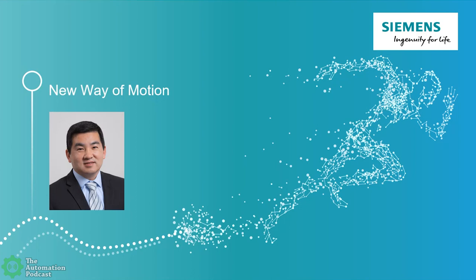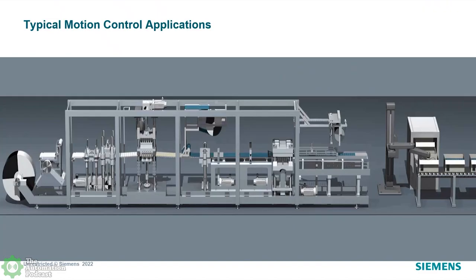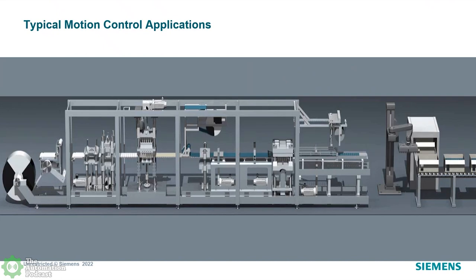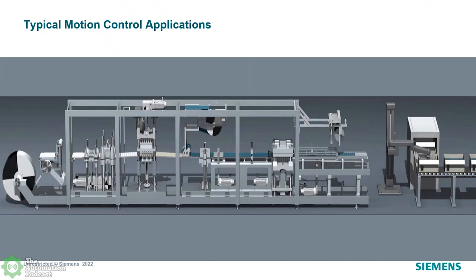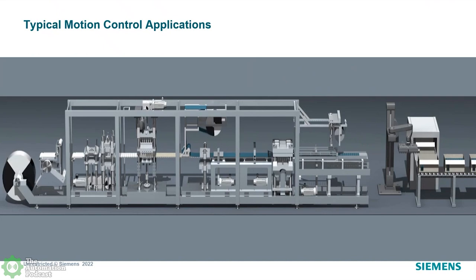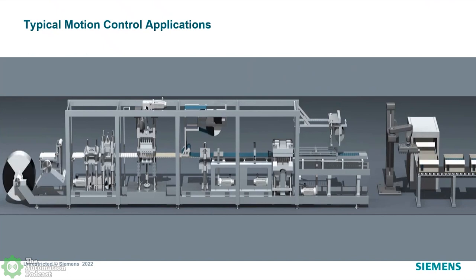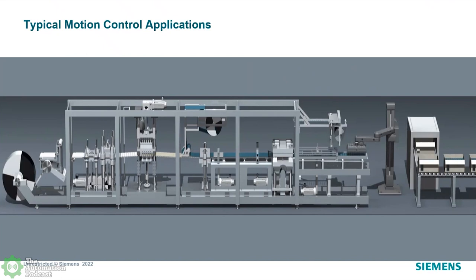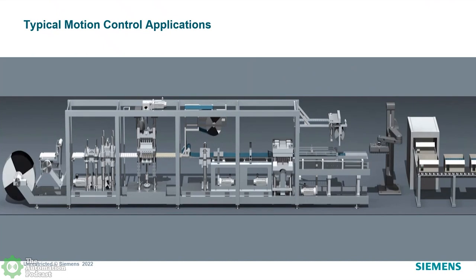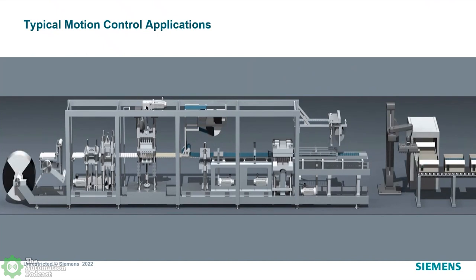We like to call it a new way of motion. Hopefully at the end of this presentation podcast, you take away a new way of thinking about motion. When we talk about motion, I always like to jump in — what is the typical motion application? Here we have a machine doing multiple different synchronized motion applications: a converting application where you have a roll being stretched with tension, lots of axes synchronized to each other, and at the end, there's a pick and place, which is very common for machinery.